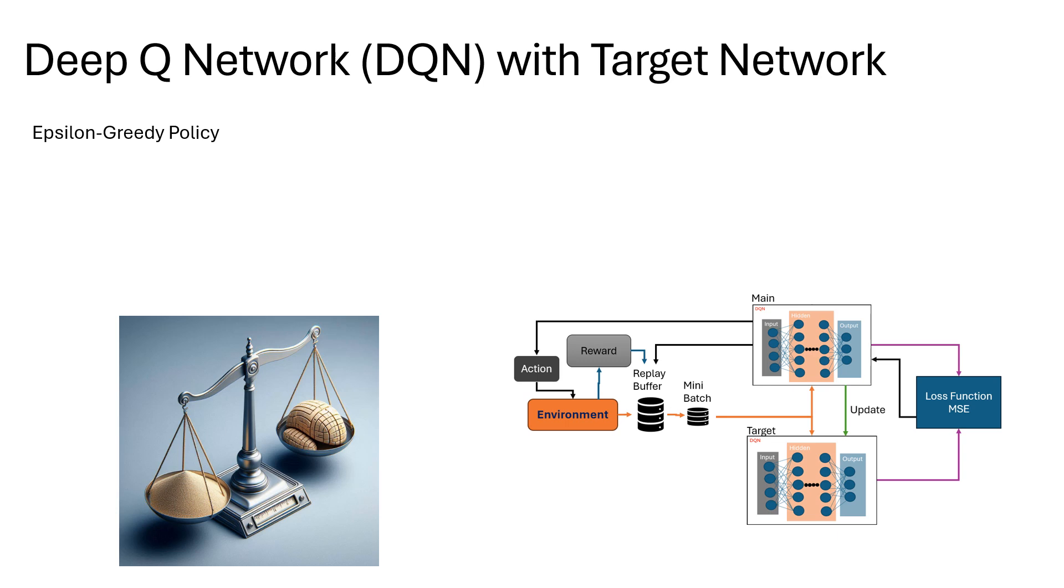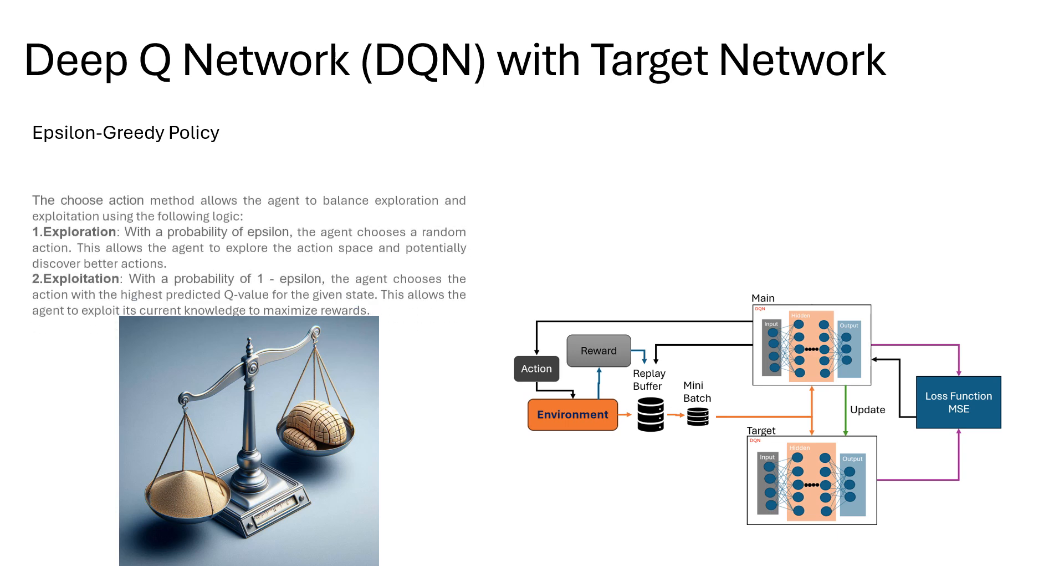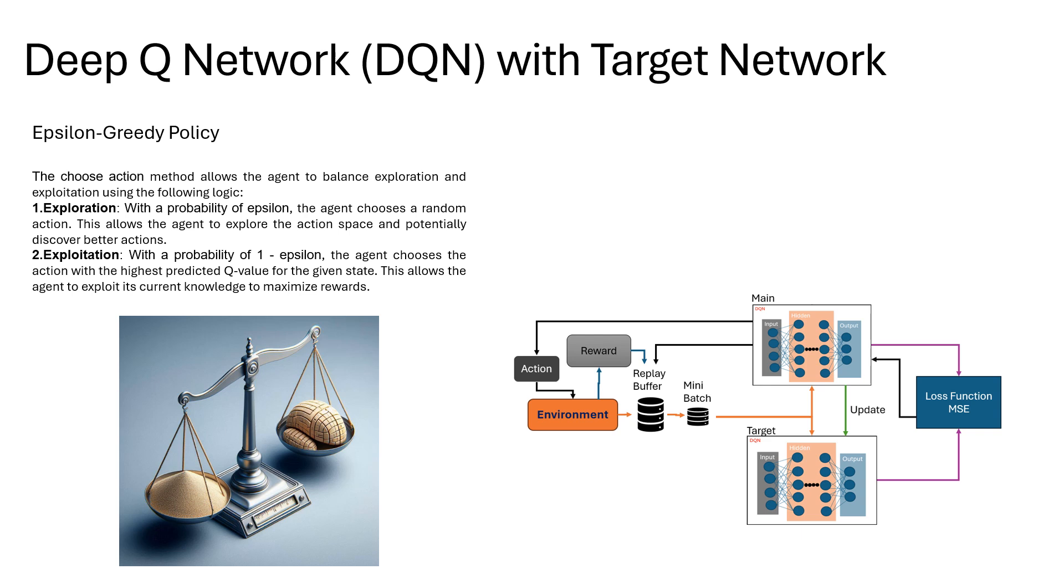So there is something important also: exploration and exploitation. For this we use the epsilon-greedy policy. It allows the agent to balance exploration and exploitation using the following logic. For exploration, with probability epsilon, the agent chooses a random action. This allows the agent to explore the action space and potentially discover better actions. For exploitation, with probability one minus epsilon, the agent chooses the action with the highest predicted Q value for the given state. This allows the agent to exploit its current knowledge to maximize rewards.